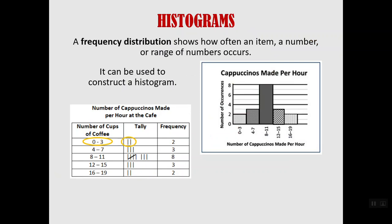You can see in the zero to three there are two tick marks so the frequency there is two. That happened twice. So that corresponds on our histogram to the column zero to three and you can see that the bar goes all the way up to two.